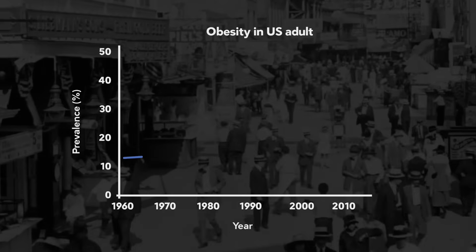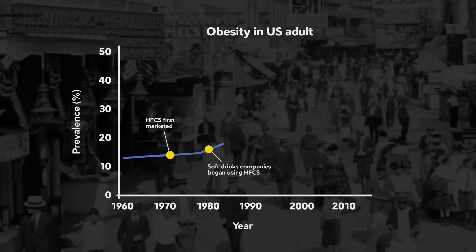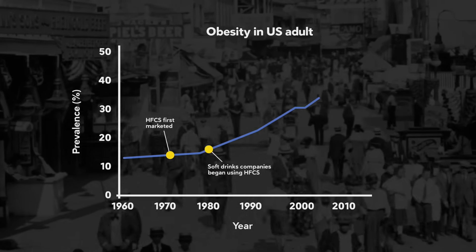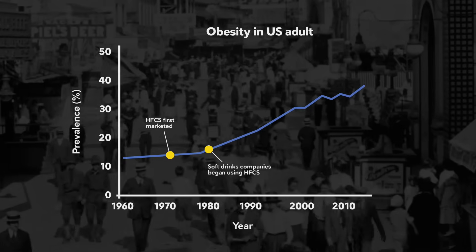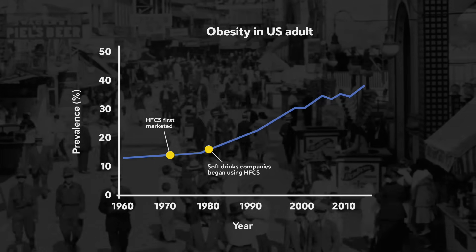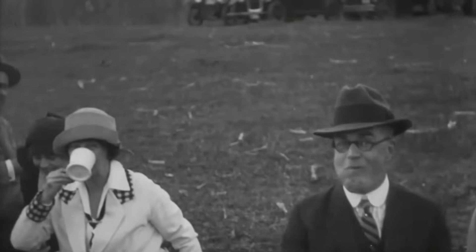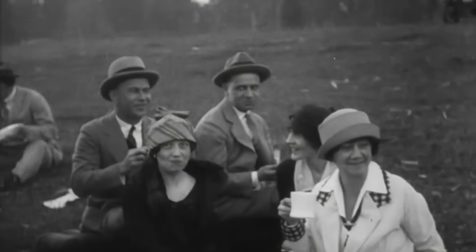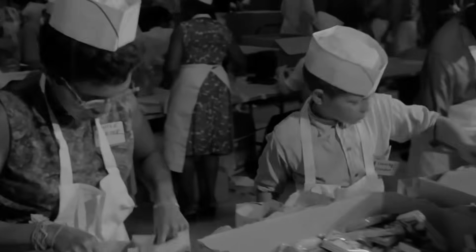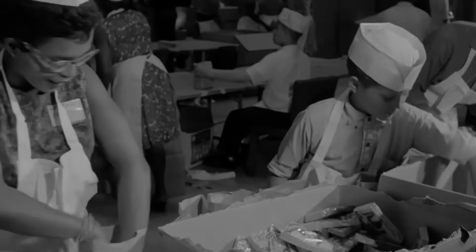If we look back in history, the level of obesity in America began to climb around the same time the food industry started using lots of high fructose corn syrup. Because high fructose corn syrup is cheap and readily available, it's everywhere in packaged foods. The food industry knows that most people buy foods based on how they're promoted, not the nutritional content — and often a lot of these foods marketed as healthy and low fat are loaded with sugar.